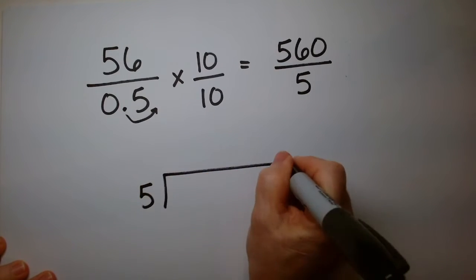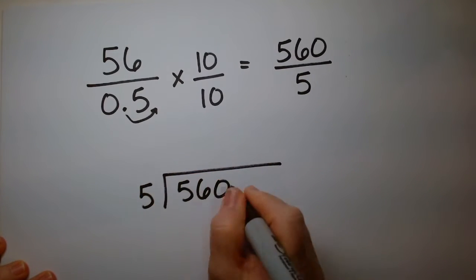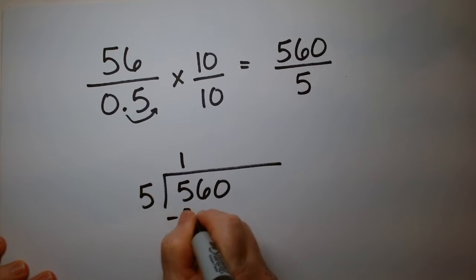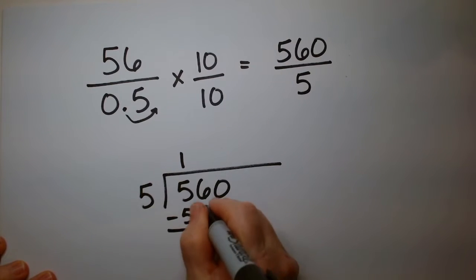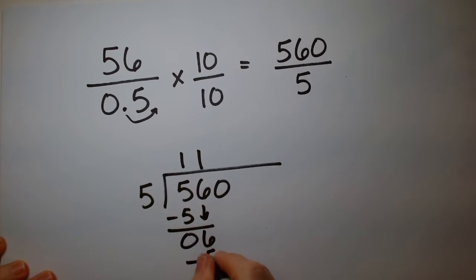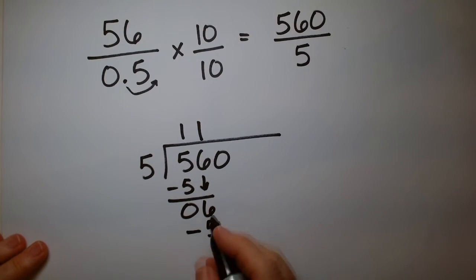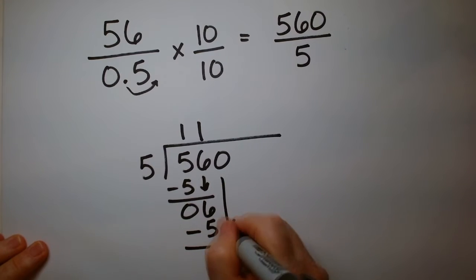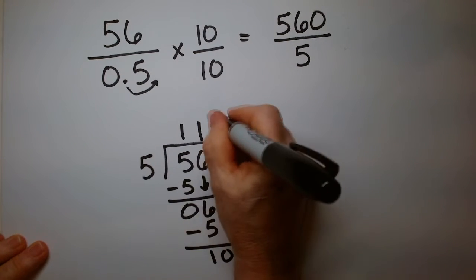5 goes into 560. 5 goes into 5 once, and there's nothing left. Bring down the 6. 5 goes into 6 once. We have a difference of 1. Drop the 0. 5 goes into 10 twice.